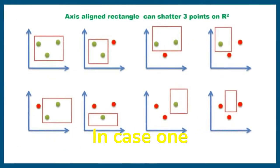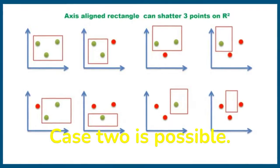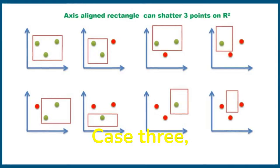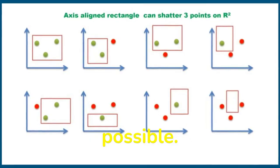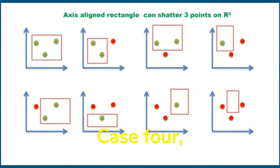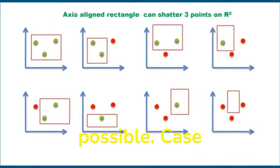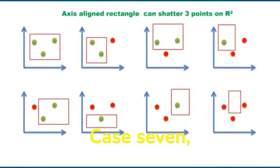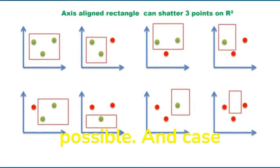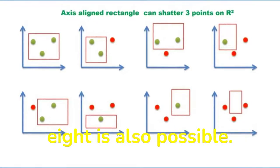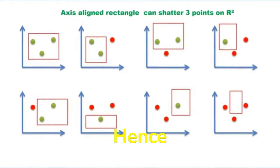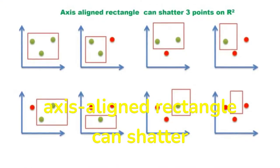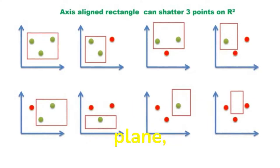Consider three points. All eight cases — case one through case eight — are possible to classify correctly using an axis-aligned rectangle. Hence, the axis-aligned rectangle can shatter three points on a two-dimensional plane.